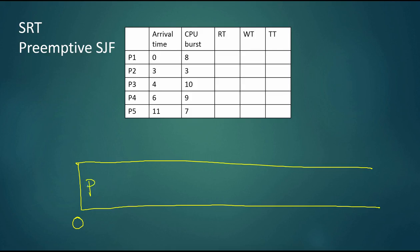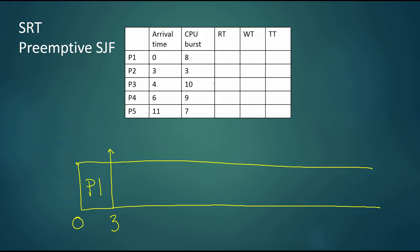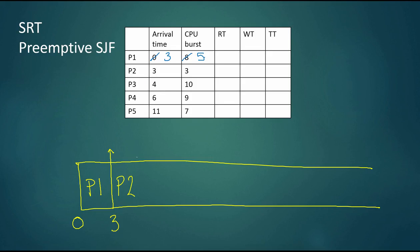At time zero we start with P1, which has a CPU burst of eight. At time three, P2 arrives and preempts P1 because at time three, P1 has five time units left of its CPU burst, while P2 has only three time units. P2 has the shorter remaining time, so P2 will go next and will not get preempted, completing at time six.